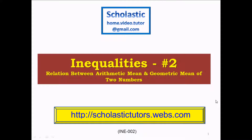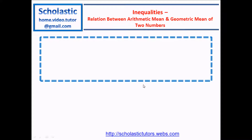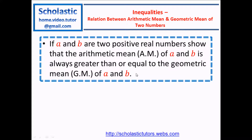Hi, welcome back. Inequalities, lesson number 2. Relation between arithmetic mean and geometric mean of two numbers. Here is the question: if a and b are two positive real numbers, show that the arithmetic mean of a and b is always greater than or equal to the geometric mean of a and b.